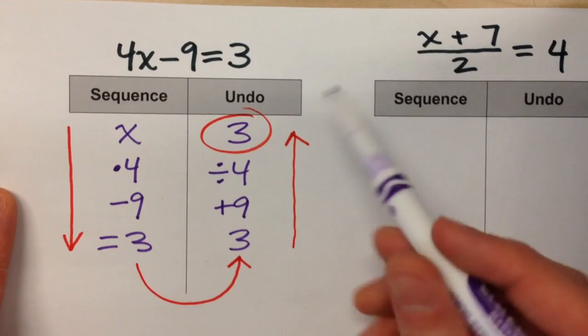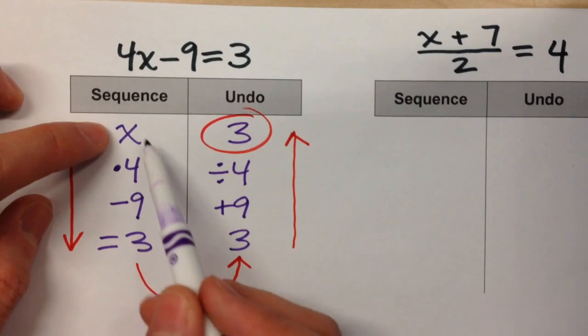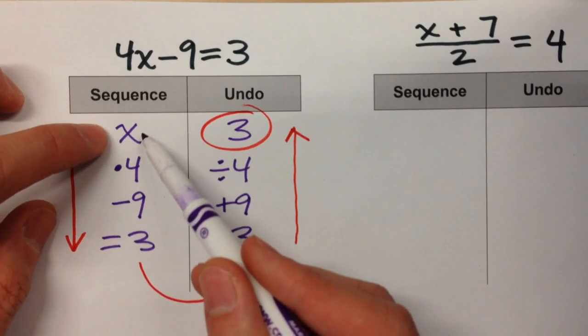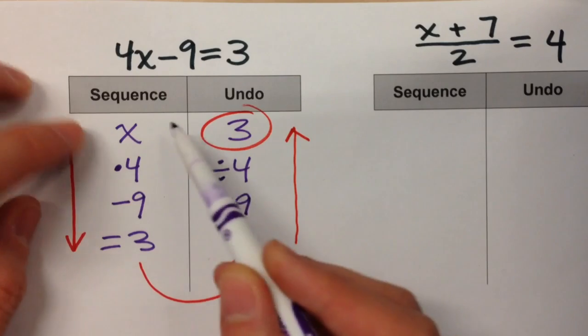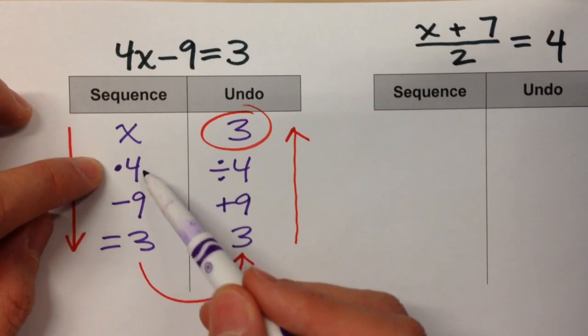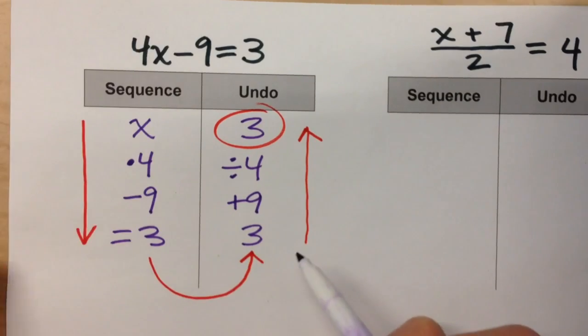And if you wanted to check it, you could take 3, put it back in the sequence column, and see if it works. 3 times 4 minus 9. Does it equal 3? 3 times 4 is 12. Minus 9 equals 3. It works.